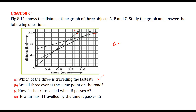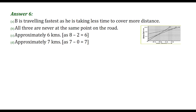Are all three ever at the same point on the road? No — they would need to intersect at the same point. How far has C travelled when B passes A? At the B and A intersection point, C is at around 6 or 7 units. How far has B travelled by the time it passes C? At the B and C intersection, B has also travelled approximately 6 to 7 kilometers.